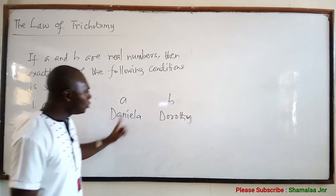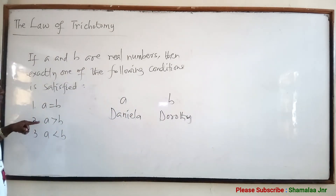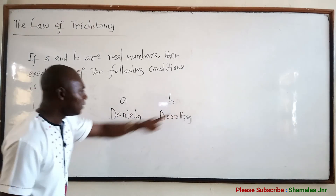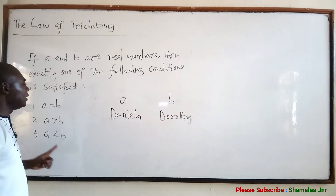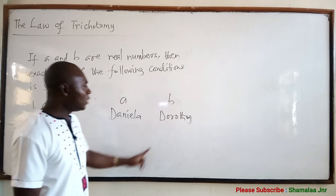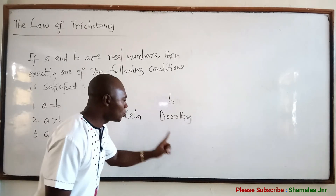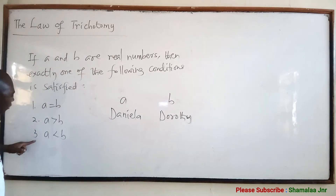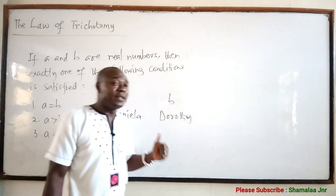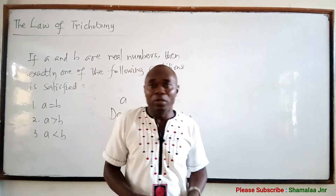If Daniela is taller than Dorothy, then the second condition will be satisfied — A is greater than B. And lastly, if Daniela is shorter than Dorothy, or if Dorothy is taller than Daniela, then the third condition will be satisfied. So this is how to explain the law of trichotomy to a lay person.